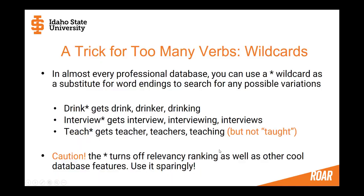One trick I just mentioned about the too-many-word-forms issue is what's called truncation, also called wildcards. You can use this asterisk or star at the end of a word stem to search for any possible endings — it allows zero to however many characters to appear on the end of the stem. So if I search drink with the star, I get drink, but also drinks, drinker, or drinking. If I do interview star, I also get interviewing, interviews, or interviewees. If I search teach with the star at the end, I'll get teach, teacher, teachers, teaching.